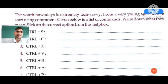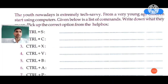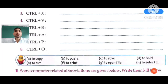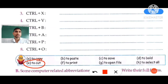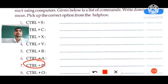Question three: Ctrl+X. X suggests cutting — like scissors. When you press Control and X on your keyboard, it cuts the selected content. You have to choose option E from the help box. It is used to cut any sentence or picture.